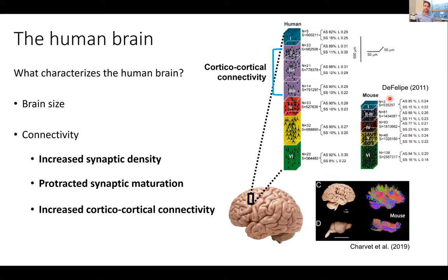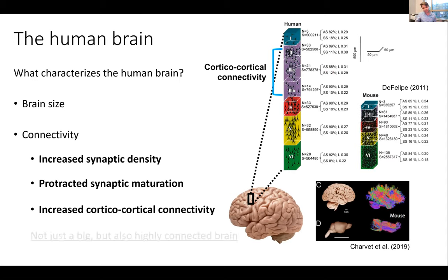If we look at the human cortex and the different layers, what is interesting is that cortical layers are very much conserved across mammalian species, but there are also very important differences. The supragranular layers of the cortex in humans are especially expanded, and those neurons play a very important role in forming connections with other cortical regions. Together with the fact that we have a larger cortex — and therefore probably more functional cortical regions — this strongly suggests that cortical-cortical connectivity has expanded in the human brain. So we don't just have a big brain; we also have a highly connected brain.